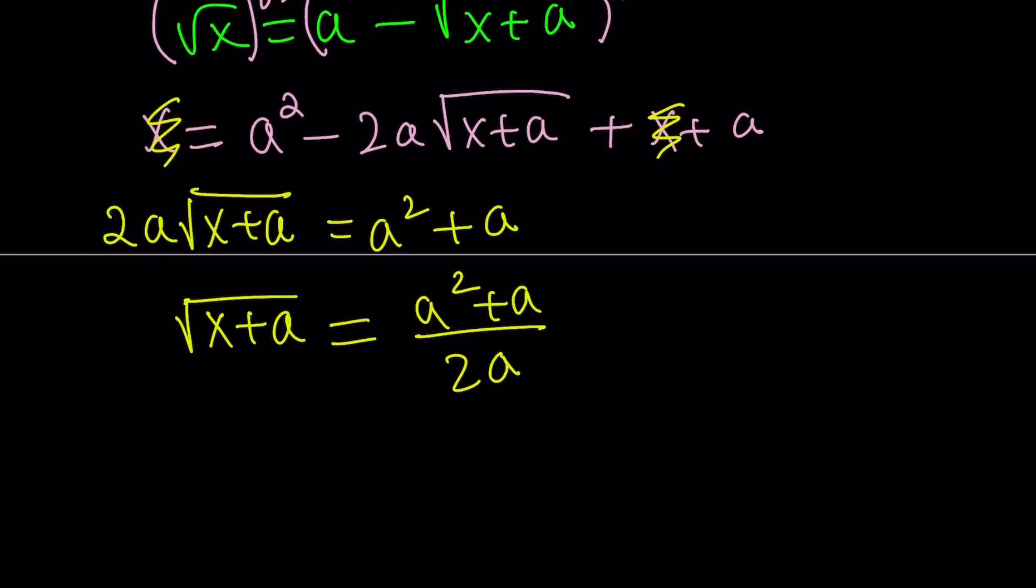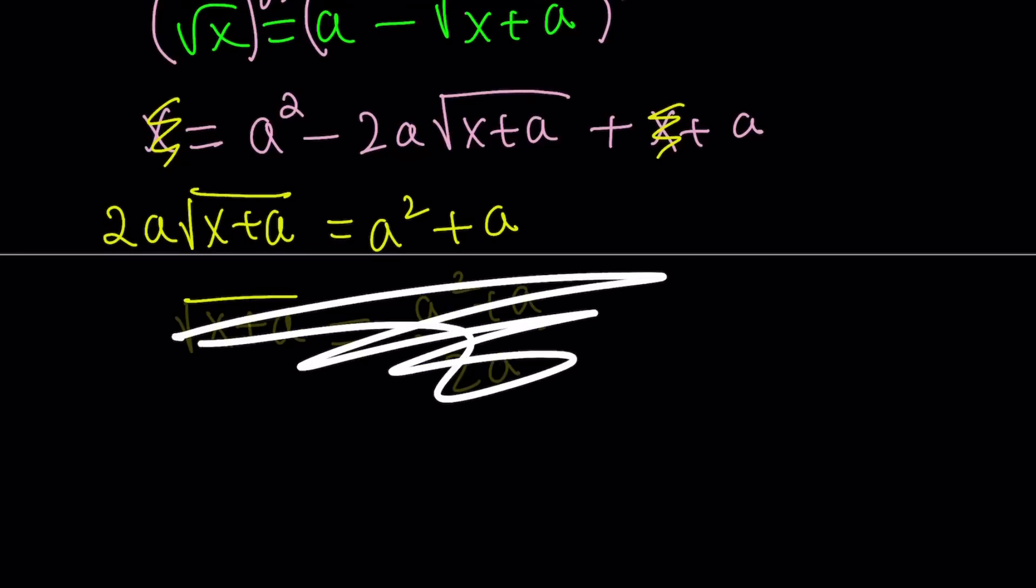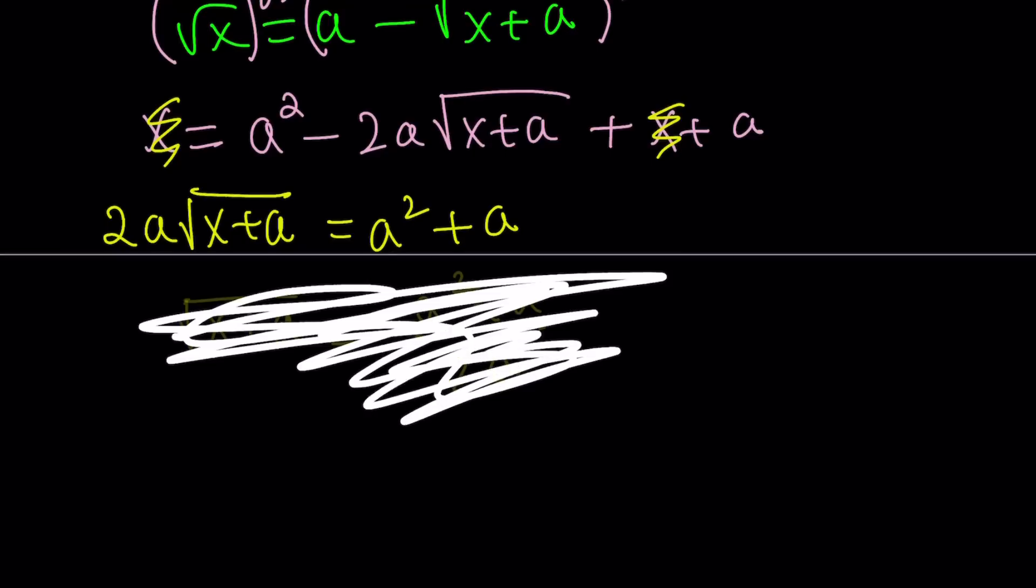So from here, we get a squared plus a divided by 2a. Okay. So what does this tell you? Well, from here, we can basically solve for x. Well, at least we got the value of square root of x plus a. But we could also do the following. How about this? Let's forget about this. We don't really need that.